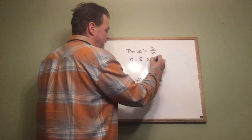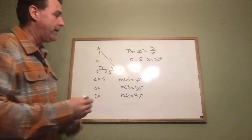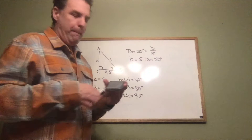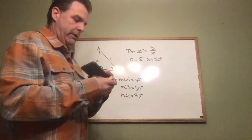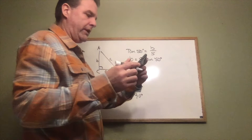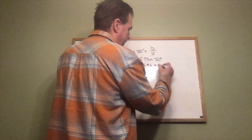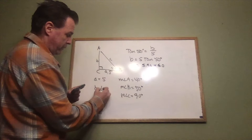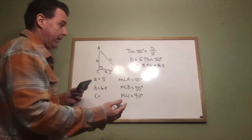Using the calculator, 5 times the tangent of 50 degrees comes out to approximately 5.96, which rounds to 6.0 to the nearest tenth. So side b is 6.0.